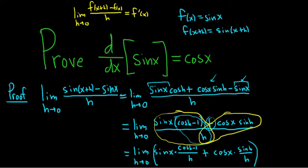So it's all of this stuff over h. Boom, there it is. Plus all of this stuff over h. Boom, there it is. So cosine h minus 1 over h. I wrote that separately because that limit is 0.